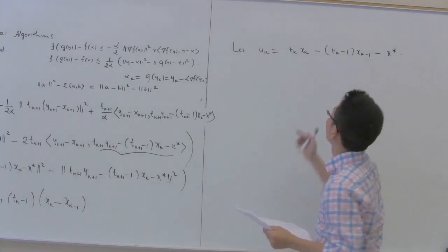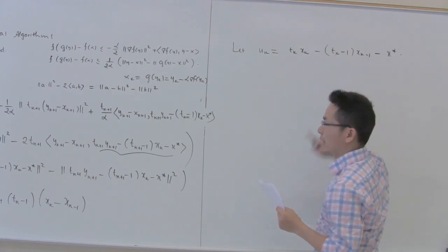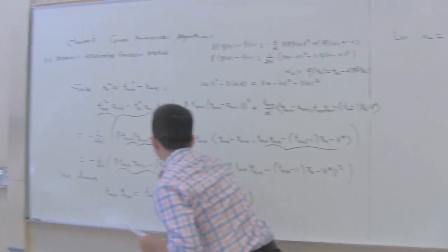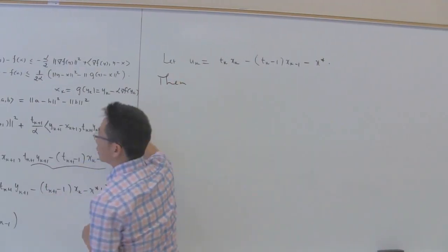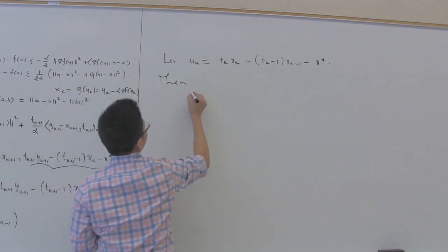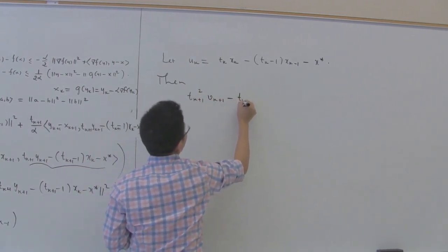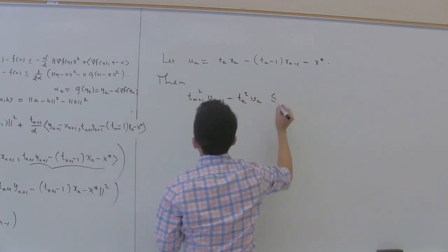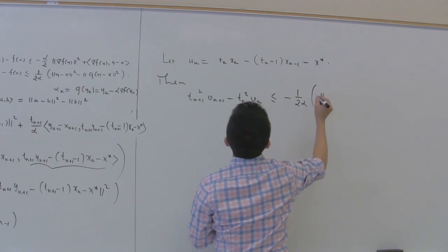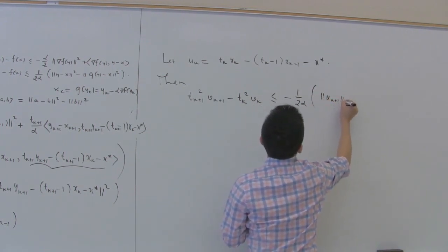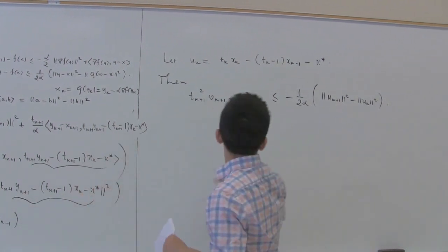Then u_{k+1} = t_{k+1}*x_{k+1} - (t_{k+1}-1)*x_k - x*, which is exactly norm(u_{k+1})^2 in the expression. So the inequality becomes: t_{k+1}^2*v_{k+1} - t_k^2*v_k ≤ -1/(2*alpha) * (norm(u_{k+1})^2 - norm(u_k)^2).